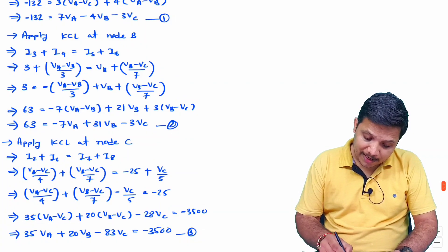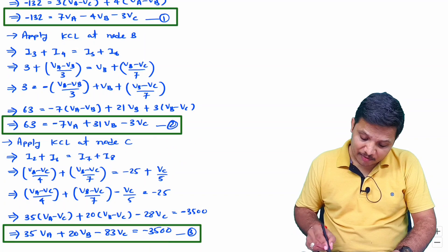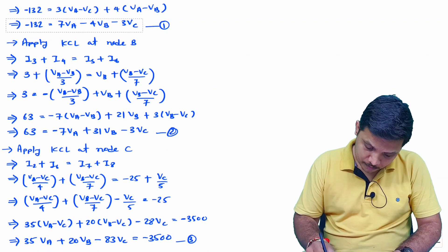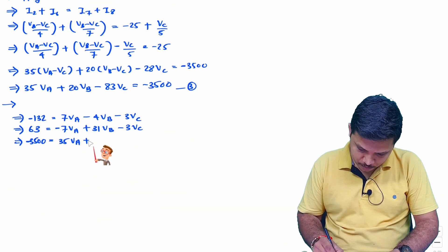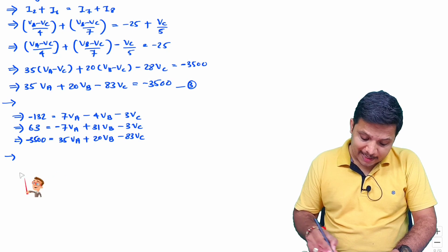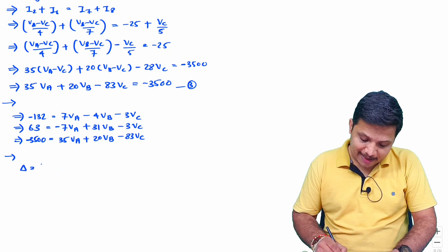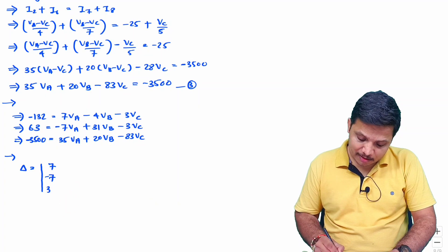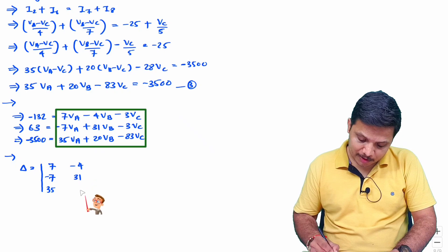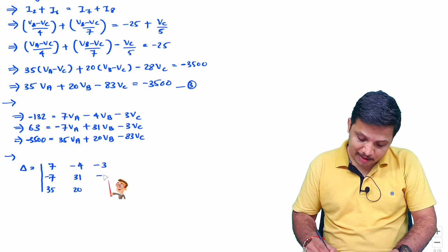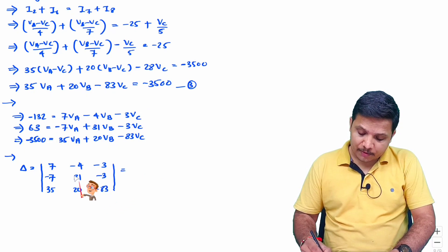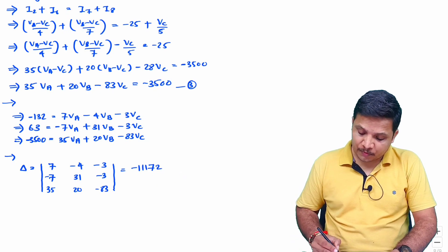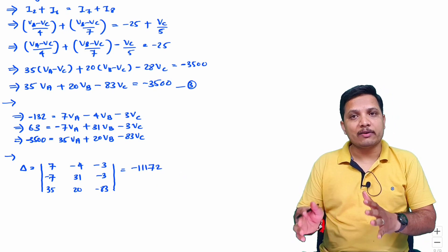Now we have three equations. Let me rewrite them together to solve further. We identify the value of delta based on the coefficients. The delta matrix is: row 1: 7, minus 4, minus 3; row 2: minus 7, 31, 20; row 3: 35, minus 3, minus 83. Solving this matrix gives delta equals minus 3172. You can verify this in a calculator.